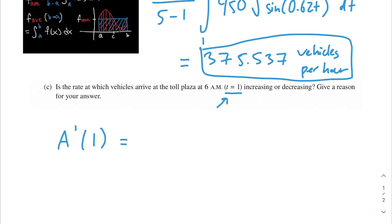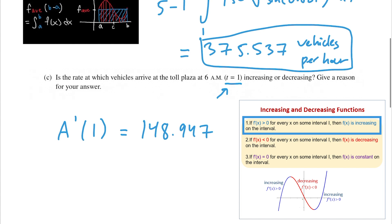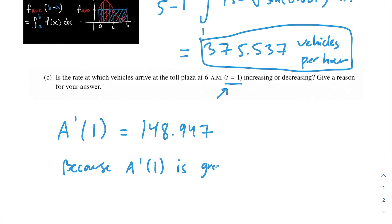Once again, just plug this into our calculator. Let's not do this by hand. We're going to get 148.947, and that should give us the indication that it is increasing. Why? Because A prime of 1 is greater than 0, the rate at which vehicles arrive at the toll plaza is increasing.